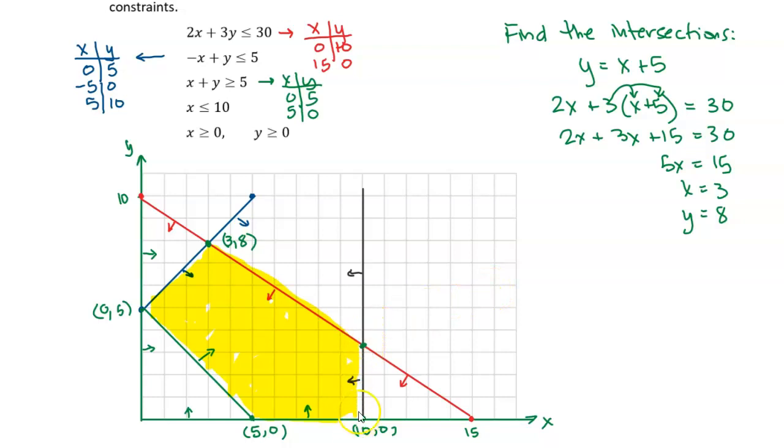All right, so now we just need to find the intersection of the red line and this black line. Now that black line is easy because that's just x equals 10, because one of my constraints was that x was less than 10. So that's just that vertical line, and x is 10. So if I substitute that into the equation for the red line, I have 2 times x, which is 10, plus 3y is equal to 30. And so I can subtract 20 from both sides. I get 3y is equal to 10, so y is equal to 10 over 3.